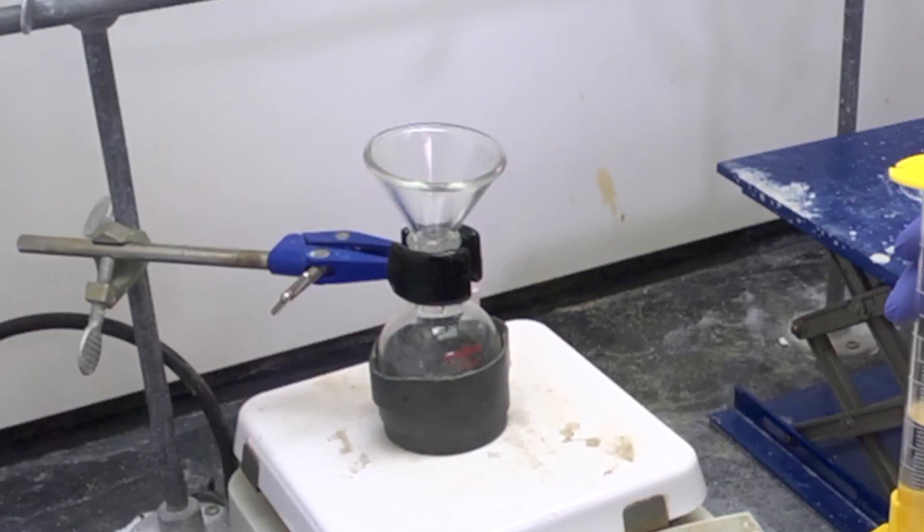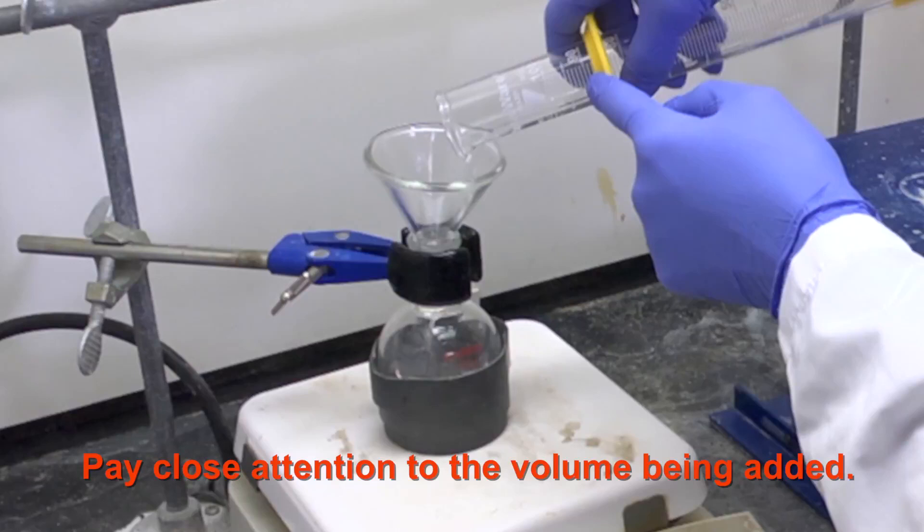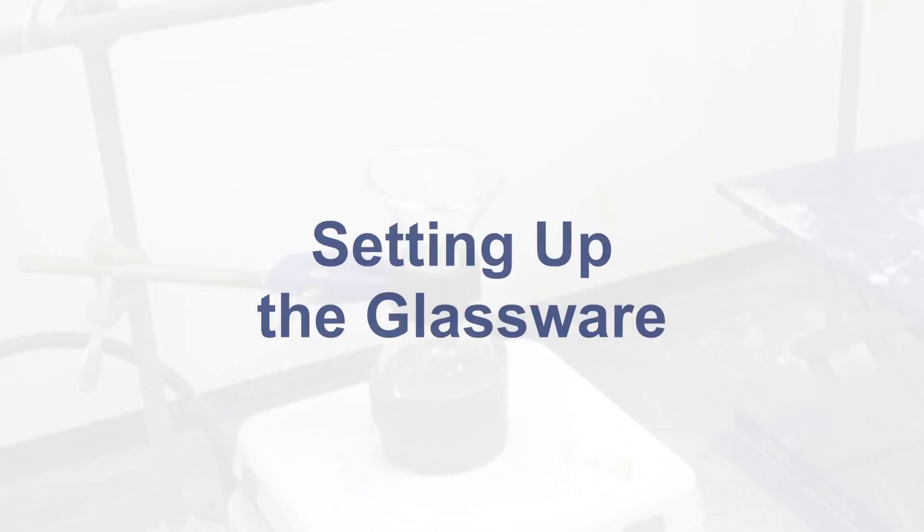When selecting a distilling flask, pay attention to the volume being added. Fill the flask more than halfway and you'll have undistilled products contaminating your condenser and fractions. Use too large of a flask and you'll lose much of your product to evaporation.